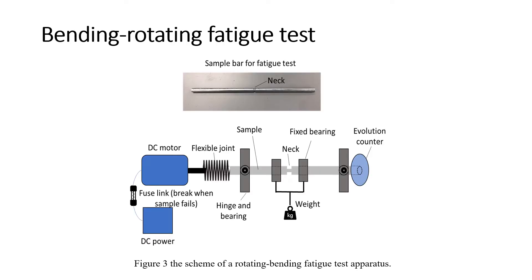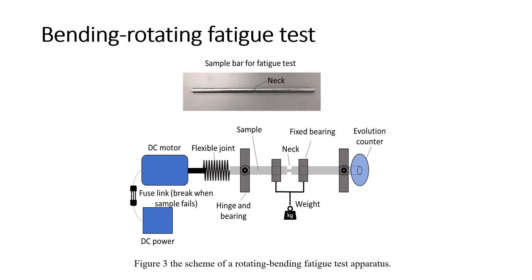The bending rotating fatigue test apparatus is one of the most commonly used for fatigue testing. Our sample bar has a narrow neck region in the middle. This neck helps to localize the region of failure and to increase the amplitude of the stresses. The sample is placed through multiple bearings, and force is applied via a bending moment using weights hung off the sample. A DC motor with a flexible joint can rotate the sample bar at 5,000 to 10,000 revs per minute. The hinge bearing allows the sample bar to deflect with no additional moment reactions, while the fixed bearing keeps the load forces pointing in a consistent direction during bar rotation.